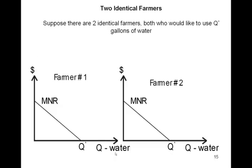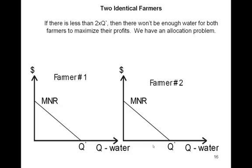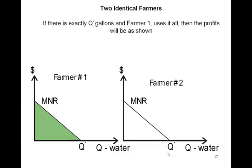Now let's think about what happens if we've got two identical farmers. We've got farmer one and farmer two. Both of them have exactly the same marginal net revenue curve decreasing down like this. And we've got Q star that farmer one would like to use and Q star is what farmer two would like to use as well. Now, if there is Q star times two water or more than that, then farmer one will use Q star and farmer two will use Q star. However, what if there's not enough water? Then we've got an allocation problem or an allocation challenge. So let's start with a case where there's exactly Q star gallons of water and farmer one's got it all. Let's suppose that farmer one is upstream, so farmer one can extract all of this water from the river and there's nothing left for farmer two.